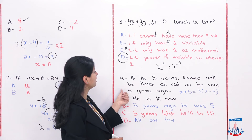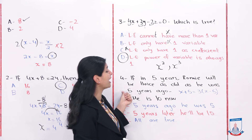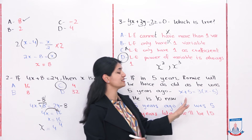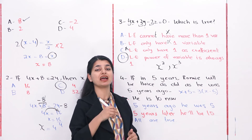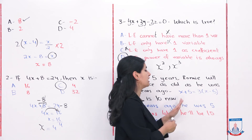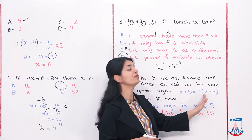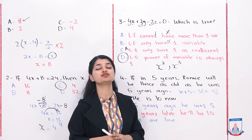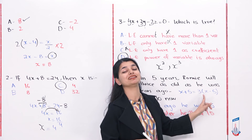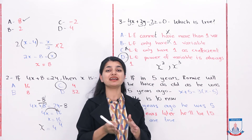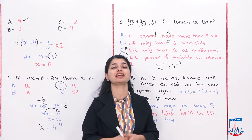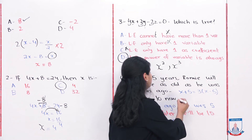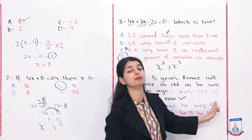The last MCQ: if in 5 years Ronnie will be thrice as old as he was 5 years ago, which statement is true? Let Ronnie's current age be x. The equation is x plus 5 equals 3 times x minus 5. Solving this equation, we find x equals 10 — meaning Ronnie is currently 10 years old. So Option A, that he is 10 years old now, is correct.